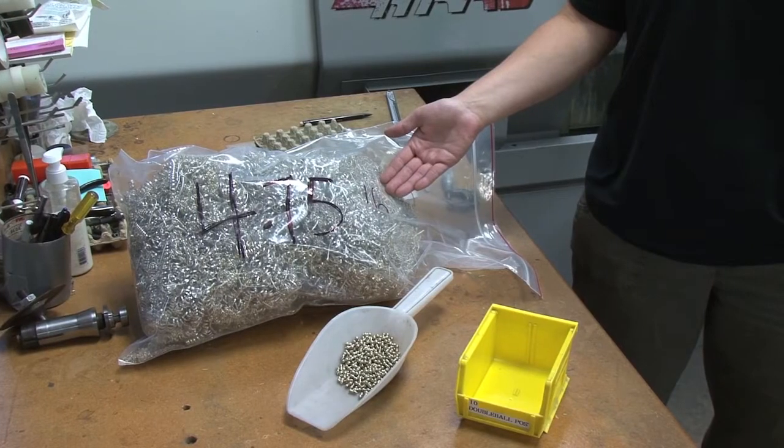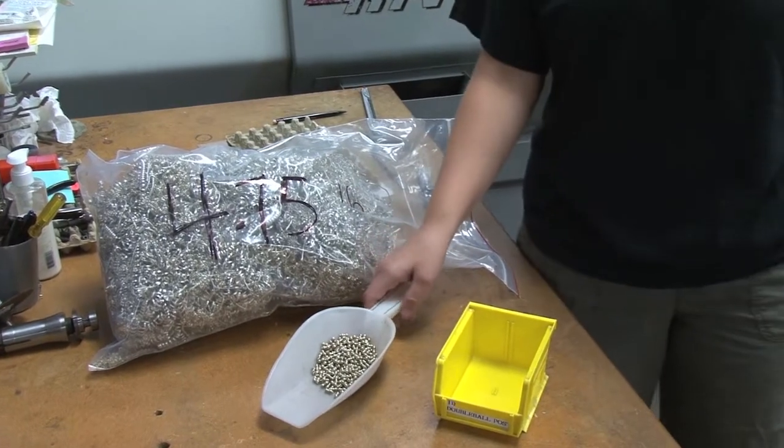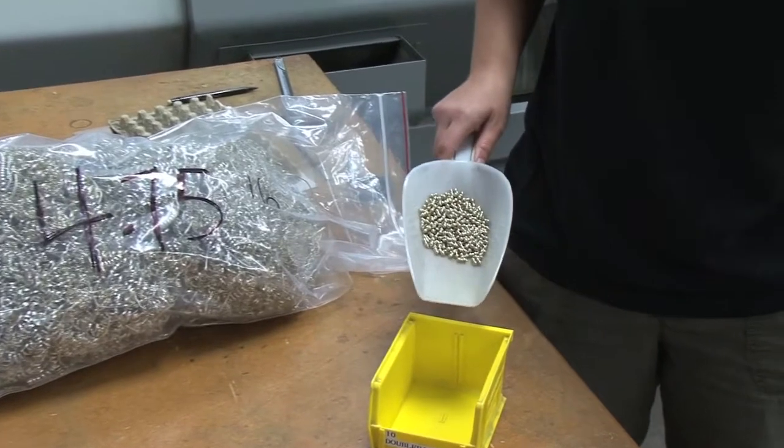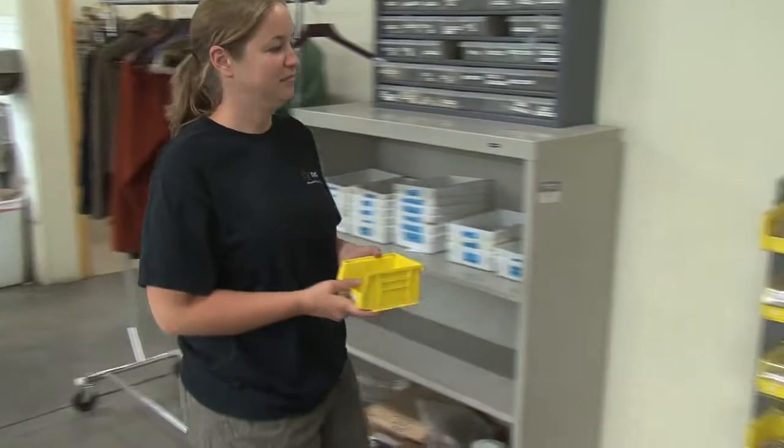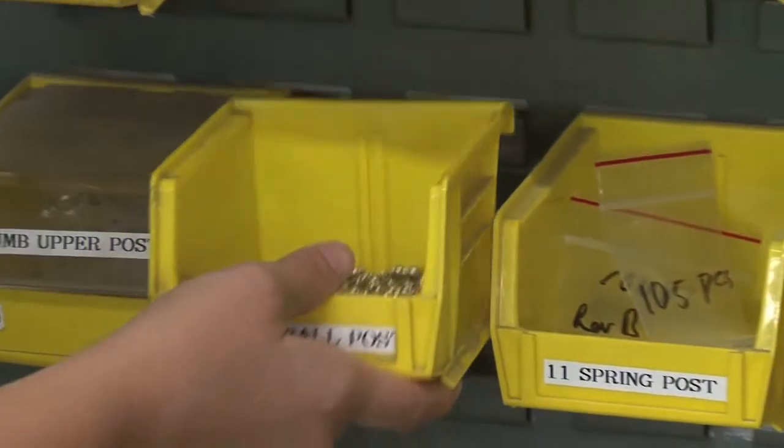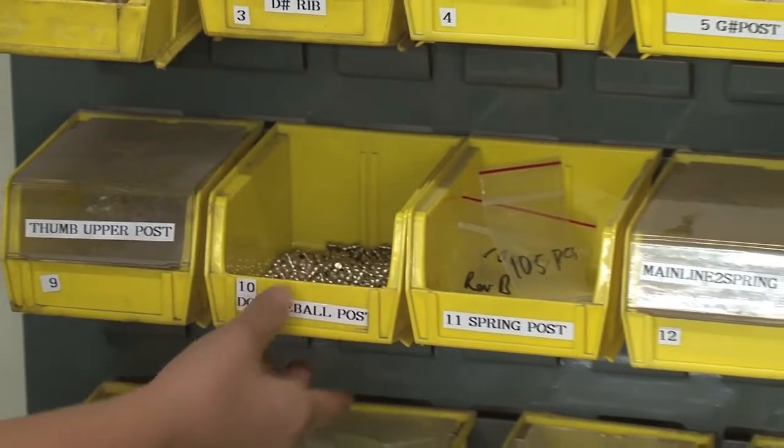The making of so many small parts generates a lot of scrap. That material is carefully collected and returned to our recycler for reclamation. The parts are counted, weighed, and stored for further use. The next step is making the body.